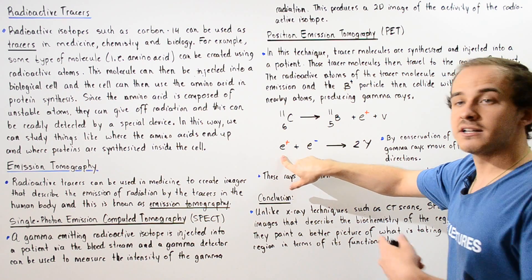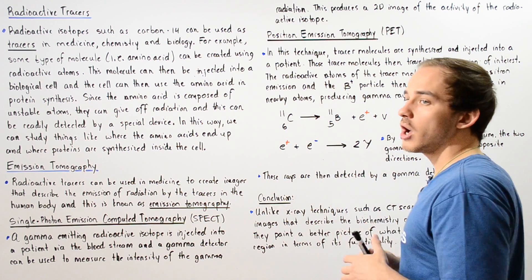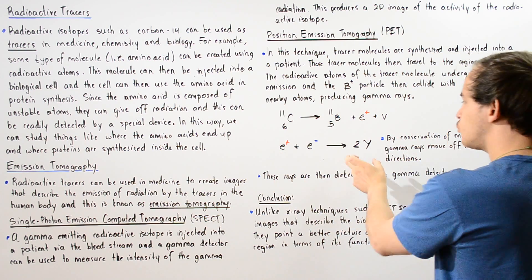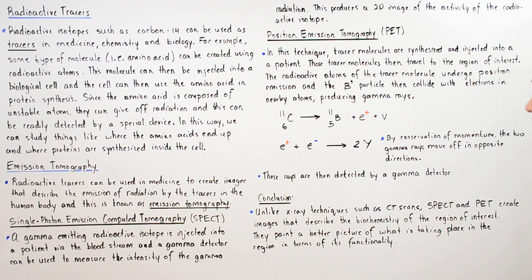That beta positive particle then collides with an actual electron found in an atom. This annihilates these two particles, releasing two gamma rays.